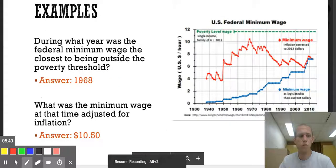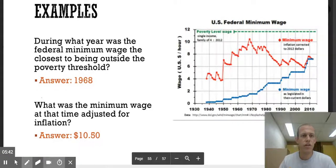The U.S. federal minimum wage. So during what year was the federal minimum wage the closest to being outside the poverty threshold? So poverty threshold is here in green. Where is the minimum wage closest to that? So it looks like there, that's the closest we ever get to the poverty level. So if we kind of scroll down and look and see where that's at, there's 1960, 1965, 1970. So it looks like it's around the 1968 range.